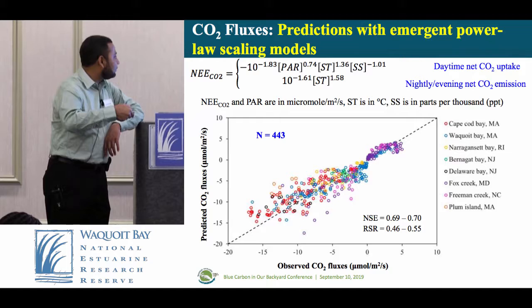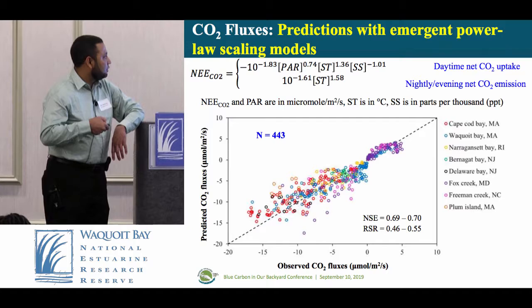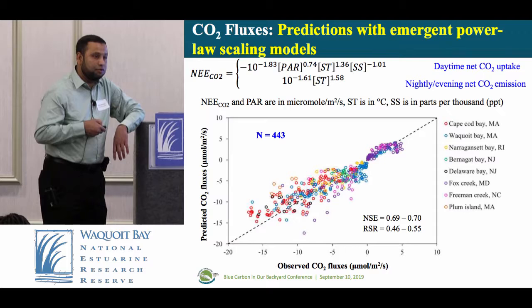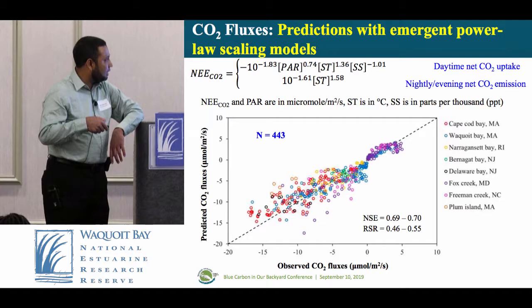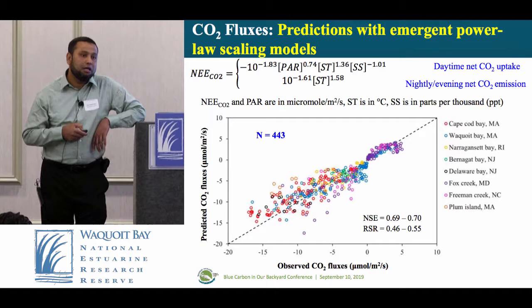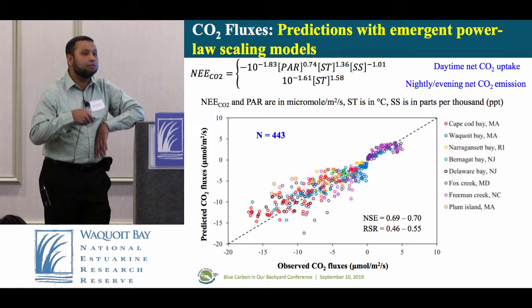The generalized model has the same structure as Ocoyote Bay: PAR, soil temperature, and salinity as drivers. For net CO2 uptake, the salinity coefficient is approximately −1. Soil temperature exponent was previously 3.28 but now we get 1.36 — close to 4/3. PAR exponent is 0.66, close to the previous 0.74 — not too far. For nighttime CO2 emission, previously 1.49, now 1.58 — we had hypothesized that respiration scales with soil temperature with exponent 3/2, and we are not far apart.